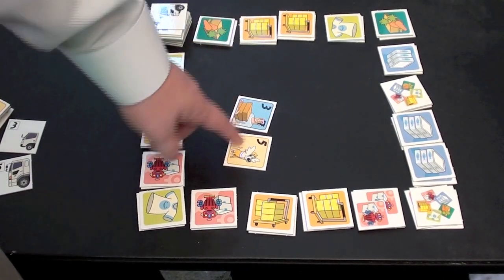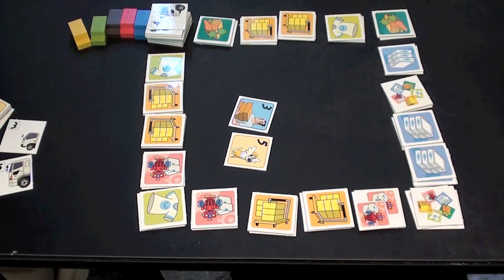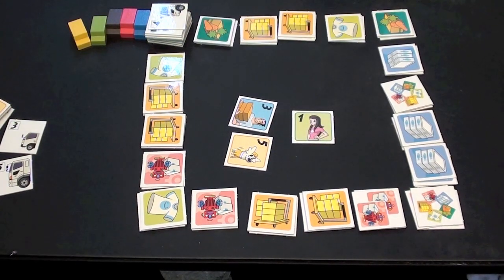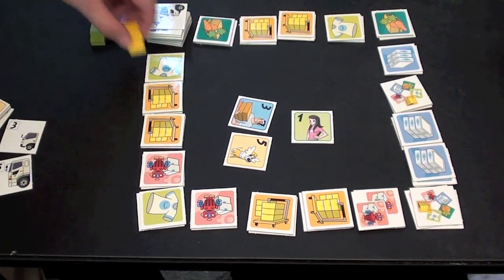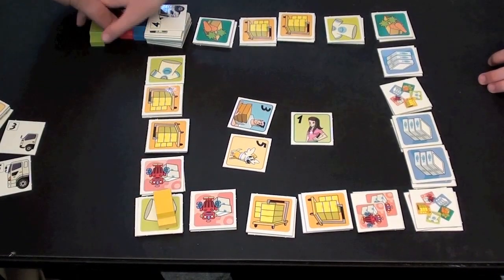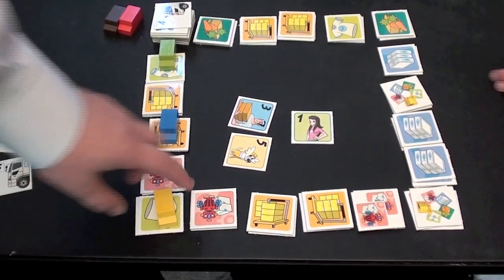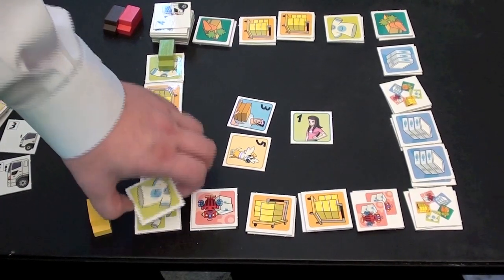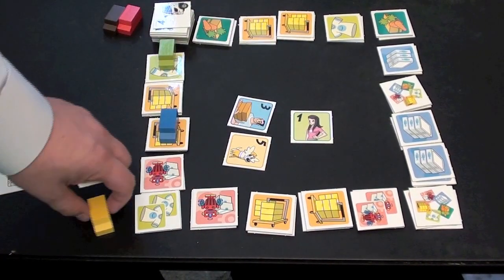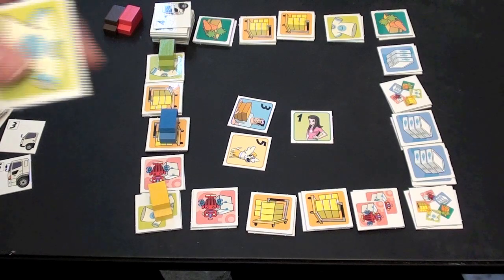So you see here the yellow truck moves 5, the blue truck moves 3, and the green truck moves 1. So, yellow truck, 1, 2, 3, 4, 5. The blue truck goes 3. And the green truck goes 1. Each of these trucks takes the top card of the pile that they're on, and they keep that in basically their hand.